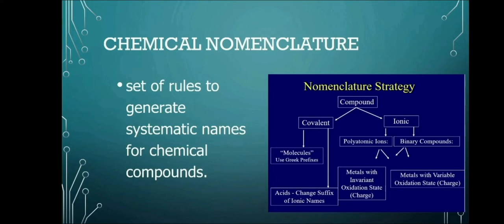Compounds can either be covalent or ionic here. When covalent, molecules use Greek prefixes. While under covalent, we have our acids where we just change the suffix of ionic names. On the other hand, ionic has polyatomic ions that includes metals with invariant oxidation state or those that has charge. And our binary compounds that includes our metals with variable oxidation state or charge.